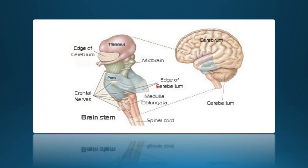The midbrain houses the ventral tegmental area and the substantia nigra — the area of dopamine synthesis, which we'll look at in greater detail soon. The pons houses the locus coeruleus, which is the area of norepinephrine synthesis. The medulla oblongata, together with the pons, contains autonomic control centers that regulate internal body functions. The cerebellum is responsible for maintaining equilibrium and acts as a gross movement control center, controlling movement, balance, and posture.